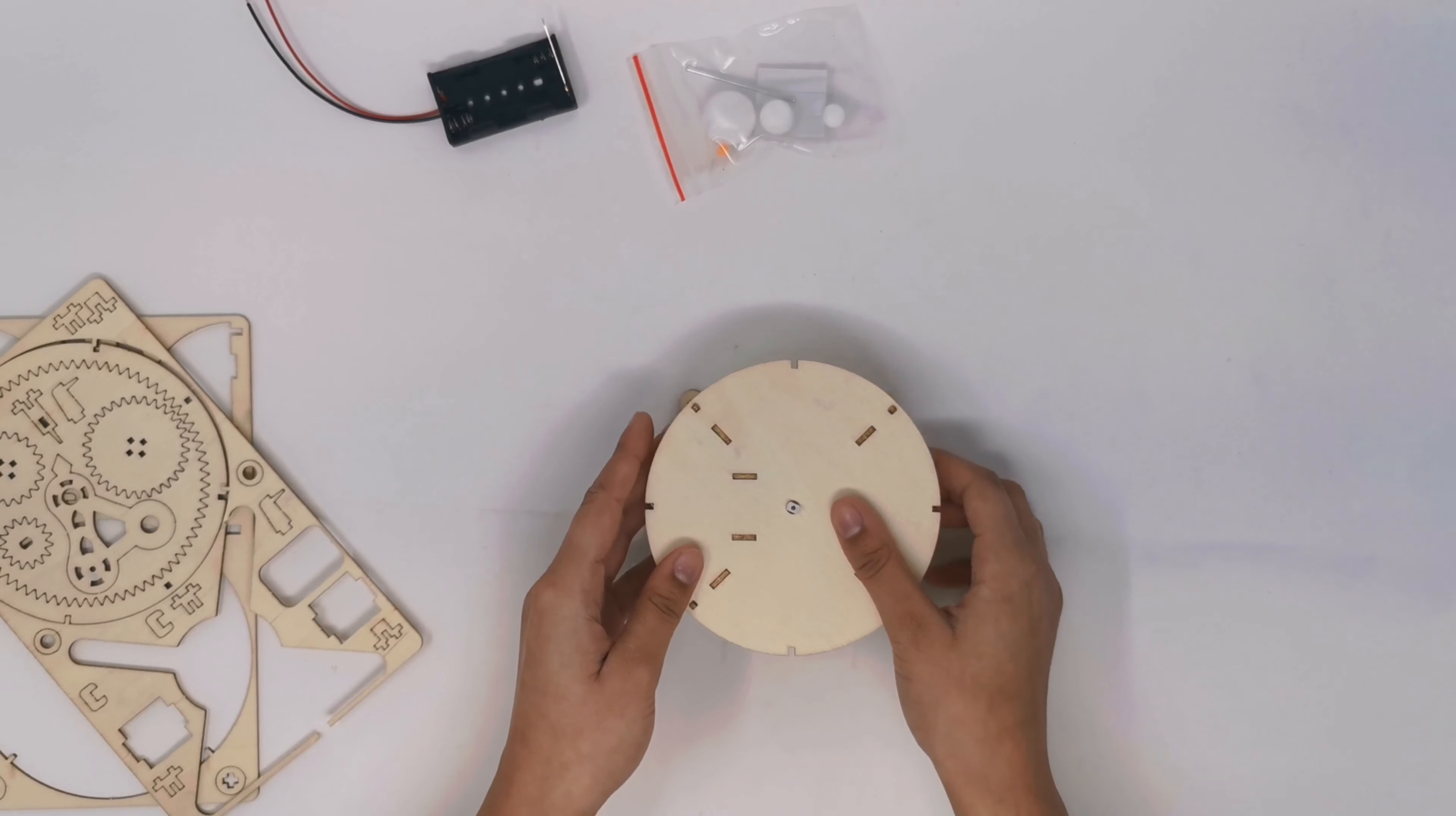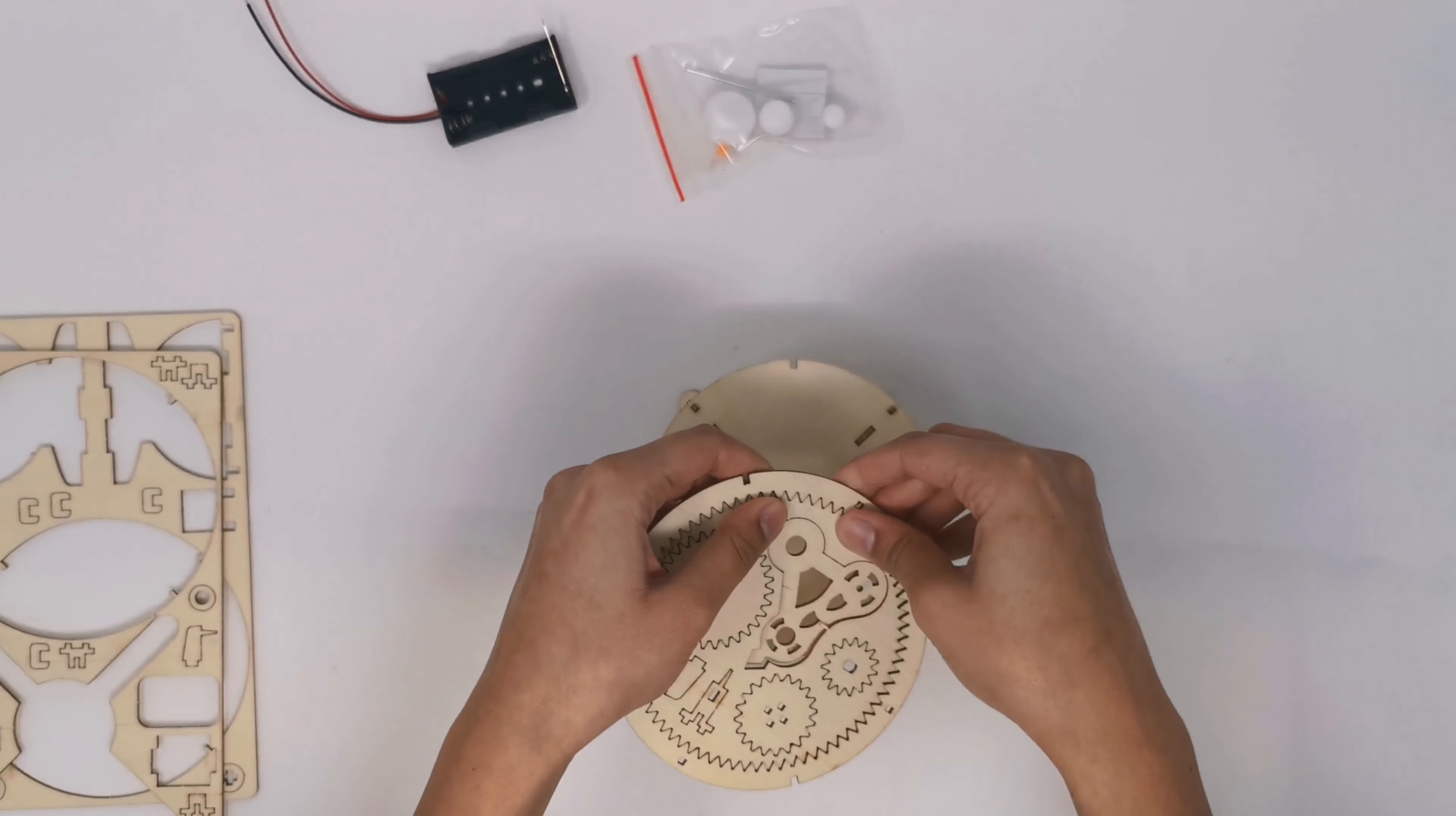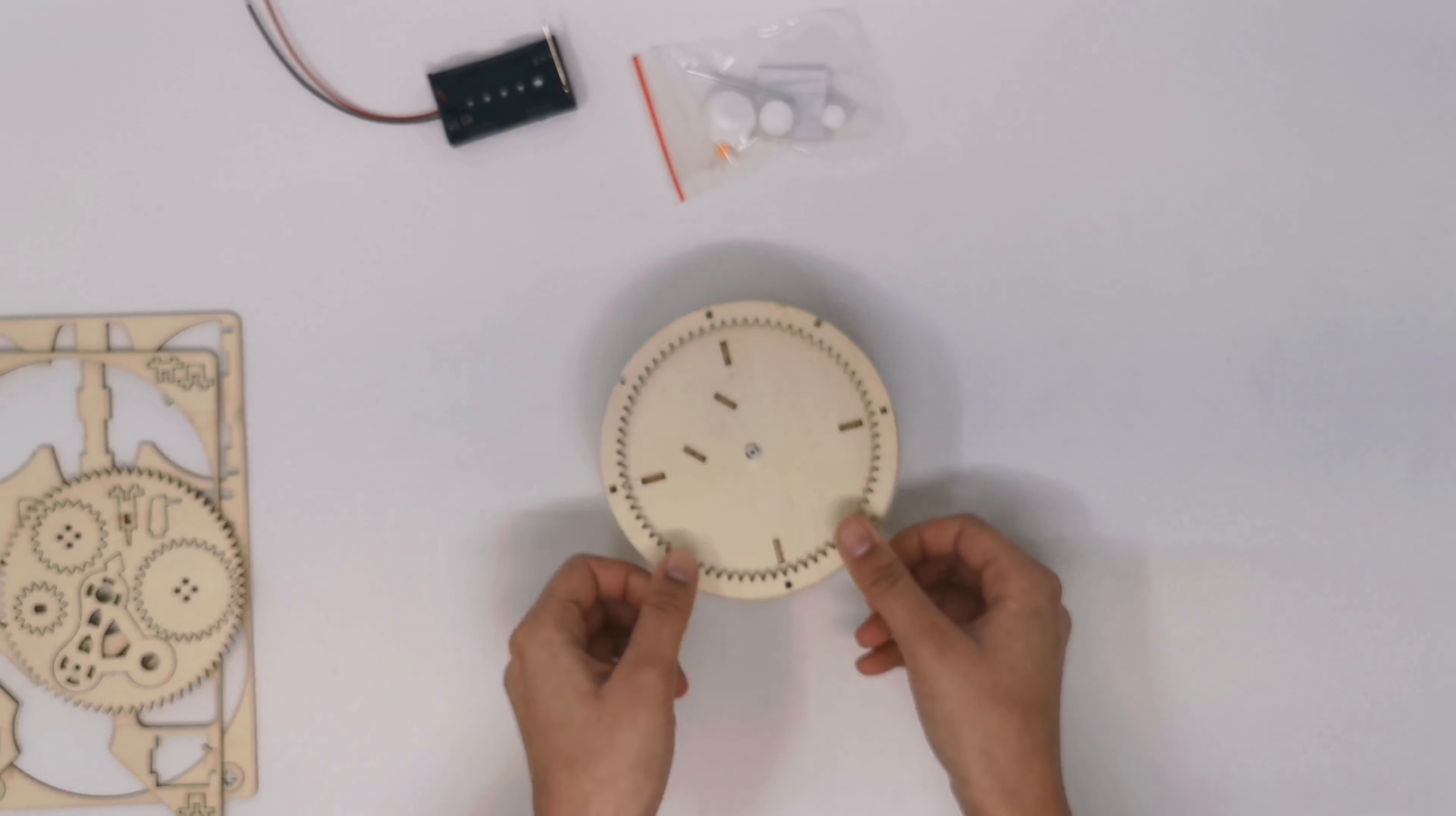Once that is all together, next you want to grab the outer ring of this other circle piece. With this outer ring, we are going to fit it on the outside and you can see each notch will be used for the gears. There are also square linings which you want to align to your bigger piece.